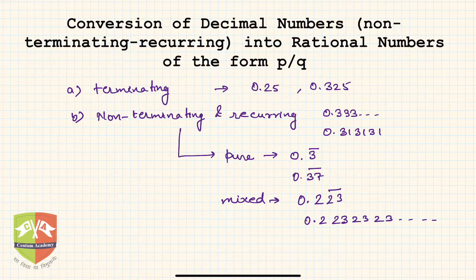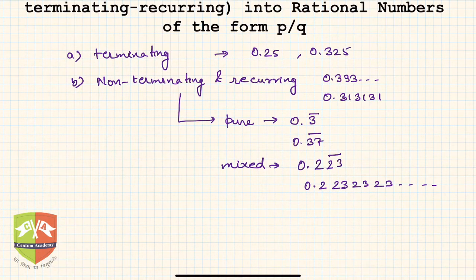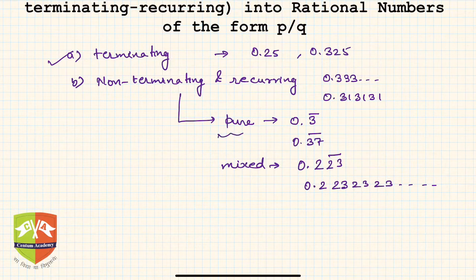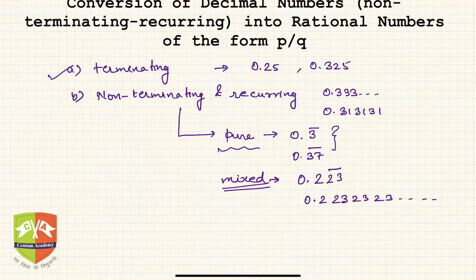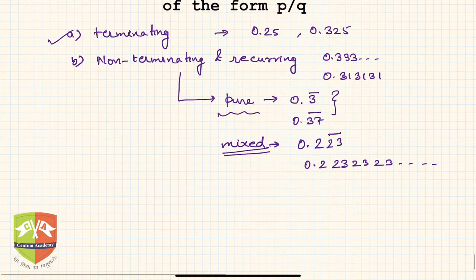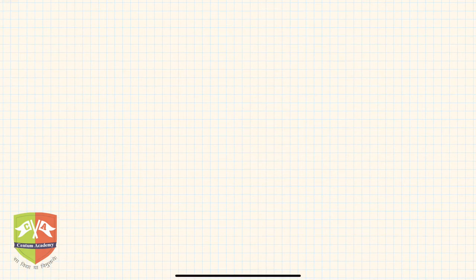In the previous two sessions we covered fully how to convert terminating decimal numbers into p by q form, and we also covered this pure form. In this session we are going to deal with mixed non-terminating recurring decimals. So let us see how — let me take an example first. I have to convert 0.231 bar.